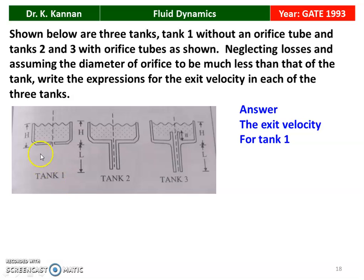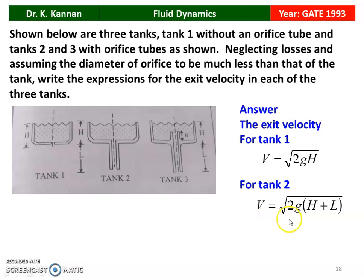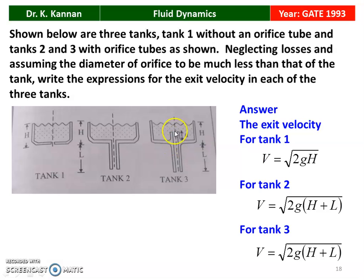The exit velocity at the hole: for the first tank it is square root of 2gh, where h is the height of the head of water. For the second tank, which has a pipe of length L, the velocity at the outlet equals square root of 2g(H + L), where L is the length of the tube and H is the head of water. For the third tank, the small projection inside the tank does not affect the velocity, so V equals square root of 2g(H + L) as well.